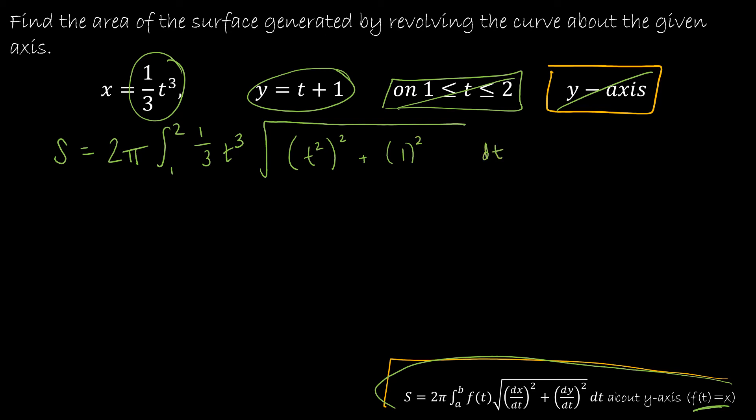Now let's do just a little bit more simplification. Anything we can do to simplify. So I'm going to take the 1/3 out. So that's (2/3)π on the outside. Integrating from 1 to 2, I've got t³ here. And t² squared is t⁴. And 1² is 1. So that's with respect to t.